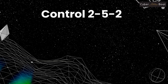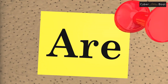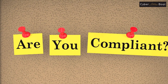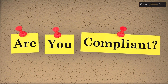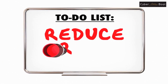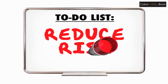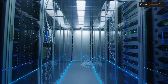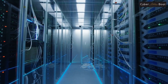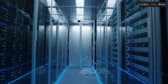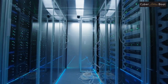Control 2-5-2 states that the cybersecurity requirements for network security management, as defined and approved in Control 2-5-1, must be implemented. This includes putting the guidelines and procedures in place to protect the organization's network from cyber risks. This can include training employees on how to use the approved network security solutions, implementing security solutions on the organization's network, and regularly monitoring the network for security threats.